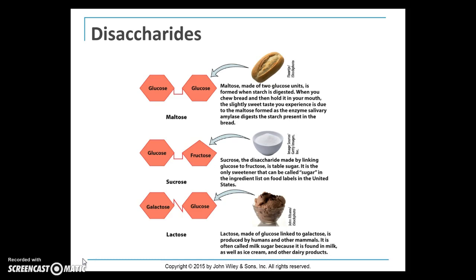Maltose is formed when starch is digested. When you chew bread and hold it in your mouth, the slight sweet taste you experience is due to the maltose formed as the enzyme salivary amylase digests the starch in the bread. Sucrose links glucose and fructose — it's table sugar and the only sweetener that can be called 'sugar' on a food label in the United States. Lactose is galactose plus glucose, produced by humans and other animals like cows, and is often called milk sugar — found in milk, ice cream, and other dairy products.